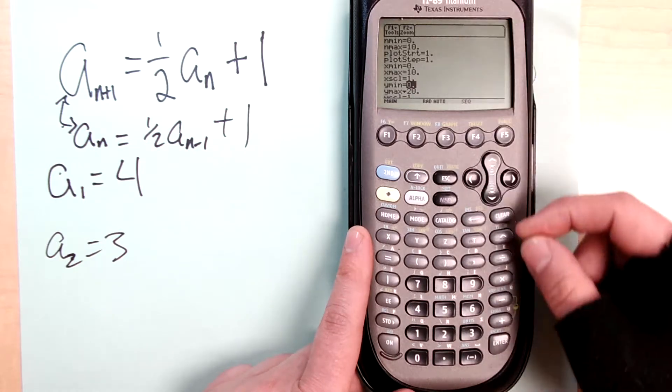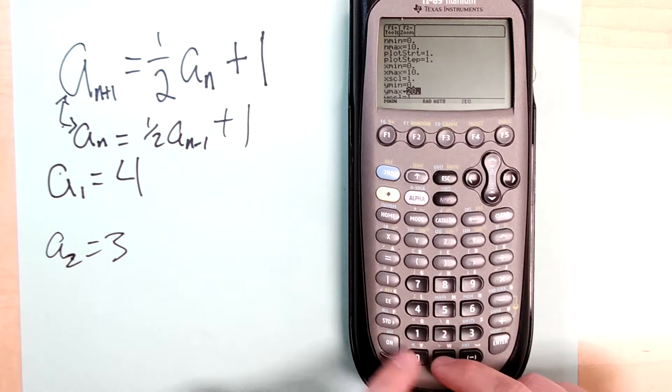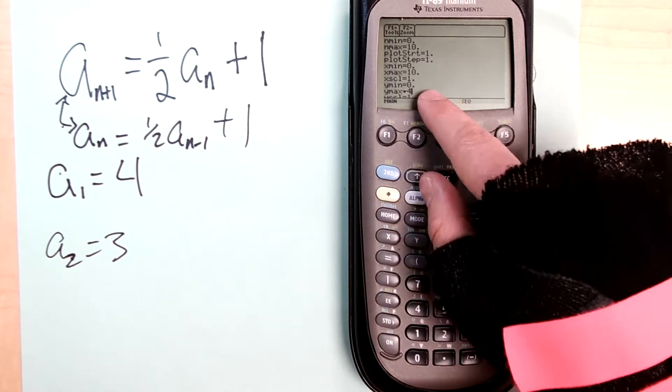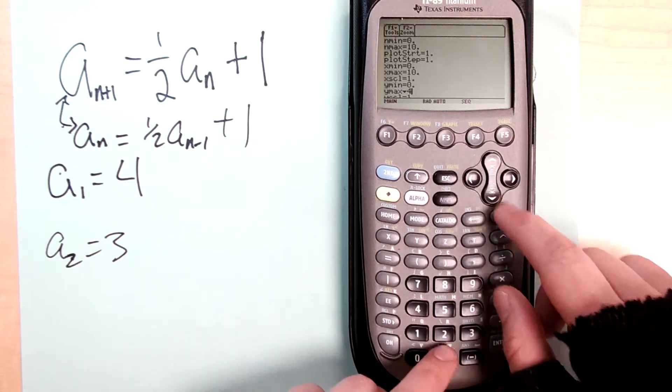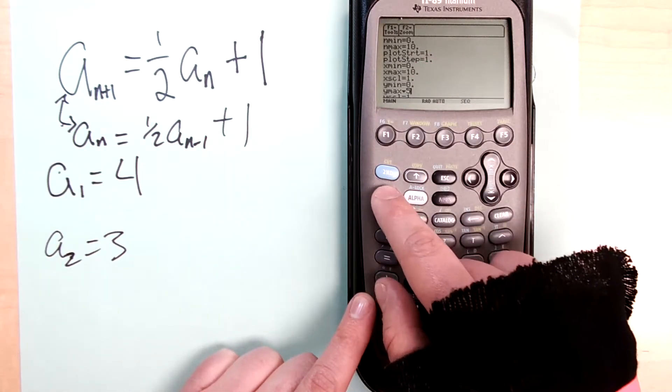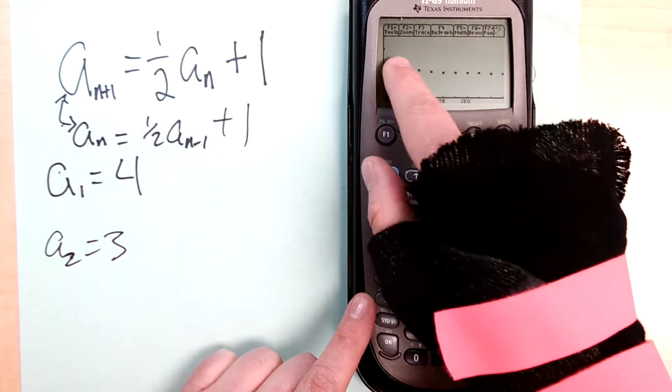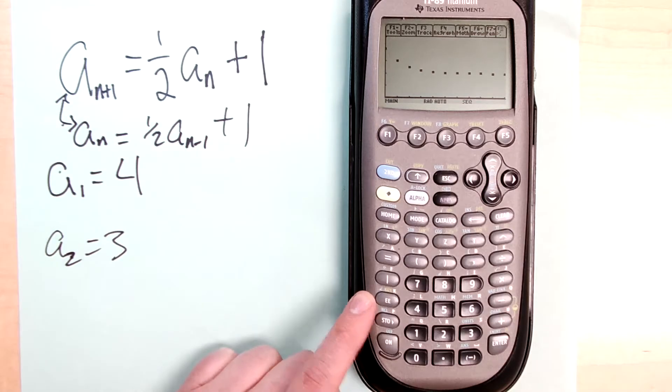Your y min is what your vertical scale is going to look like. I happen to know it's a decreasing function, so I'll go between zero and five. Now that I'm happy with it I can go to graph.